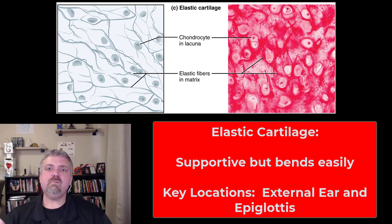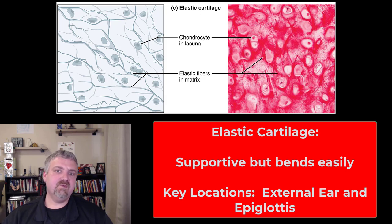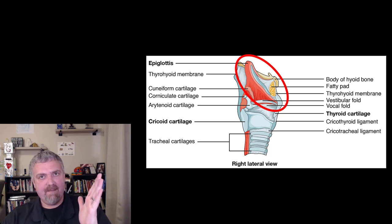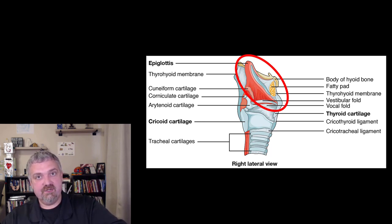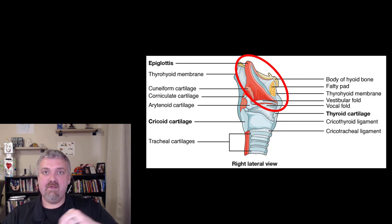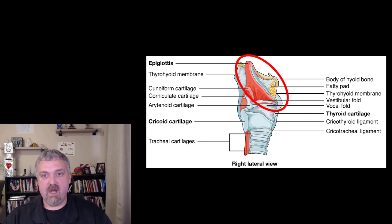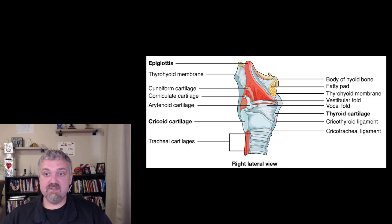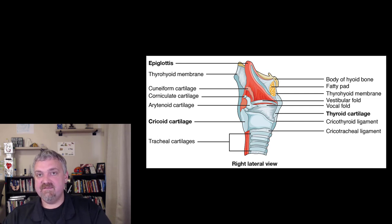The last type is elastic cartilage. As the name implies, it's going to bend very easily. The two key places you'll see elastic cartilage: first is the epiglottis — an elastic flap that when you swallow covers the glottis, the opening to your trachea, keeping food or drink from going down the wrong pipe. You want food and drink to go into your esophagus, not down your windpipe. Sadly, as we get older, the epiglottis starts to stiffen up. People in long-term care facilities may have to use thickened water because the epiglottis is so stiff that it doesn't fully cover the glottis anymore.